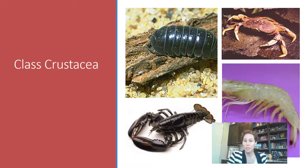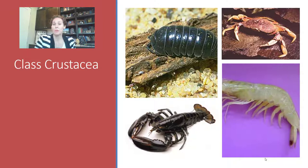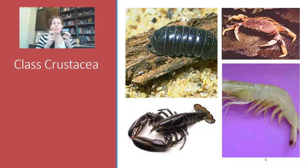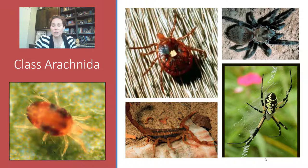Other arthropods include class Crustacea — these are normally aquatic or marine animals, but on land we have roly polies and pill bugs. When you peel the shell off a shrimp to get to the meat, you're peeling away the exoskeleton. Class Arachnida is another class of arthropods — these have eight legs or four pairs of legs and only two body sections.